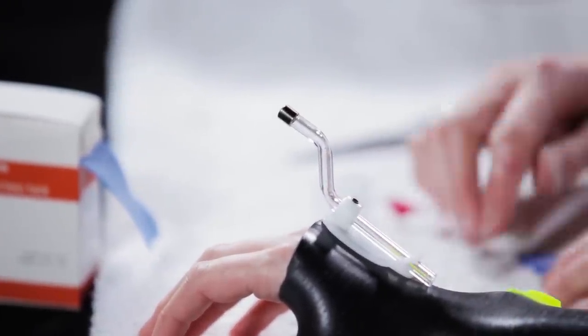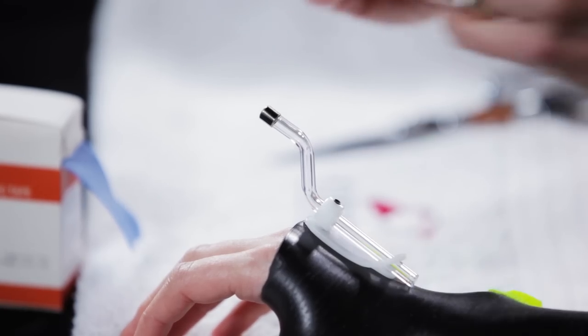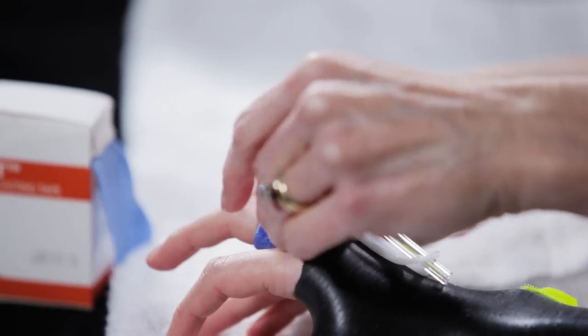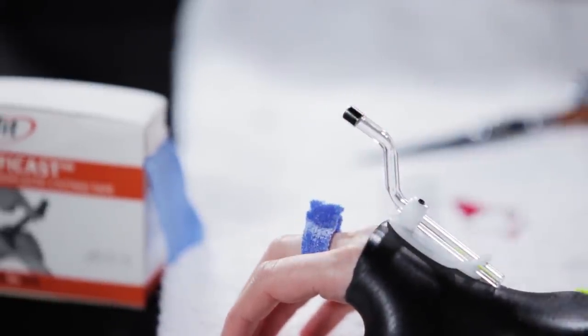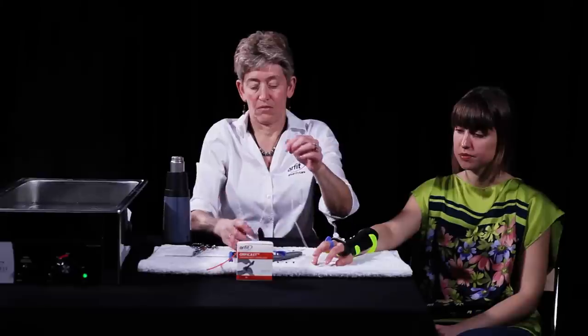Fold into half lengthwise. Place the OrphiCast underneath the proximal phalanx. Pinch together on top to form a ring which will be trimmed into a cuff.